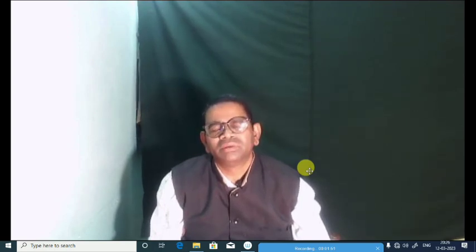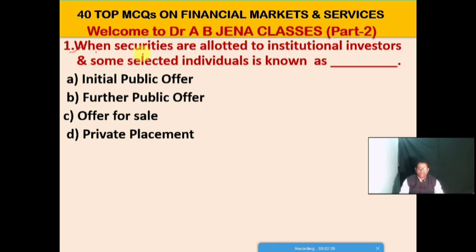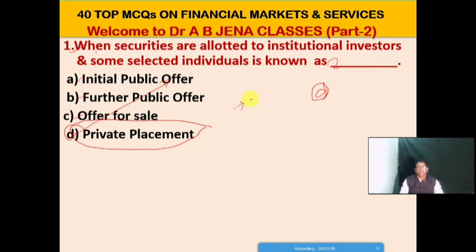In part two, we are going to discuss 40 multiple choice questions from the financial market, services, and institutions. First MCQ: when securities are allotted to institutional investors and some selected individuals, it is known as what? A: initial public offer, B: further public offer, C: offer per share, D: private placement. D is the right option. When securities are allotted to institutional investors and some selected individuals, it is known as private placement. I have already posted a video on the methods of issuing shares in the primary market — kindly go through it to learn about IPO, further public offer, and offer for sale.